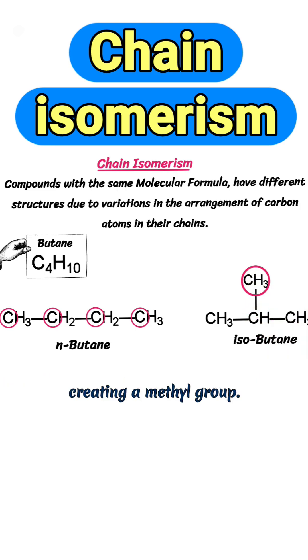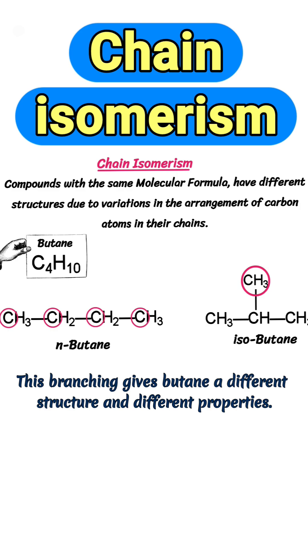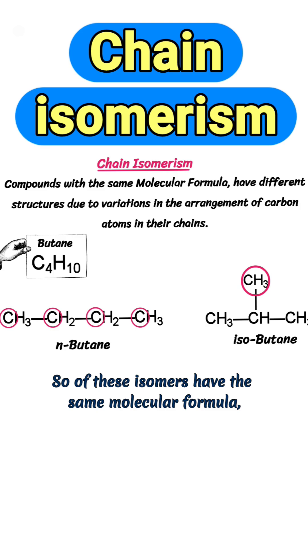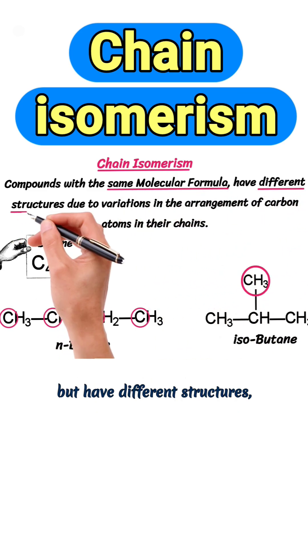Creating a methyl group. This branching gives butane a different structure and different properties. So both of these isomers have the same molecular formula but have different structures.